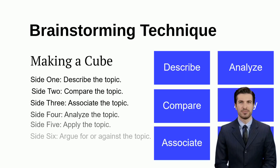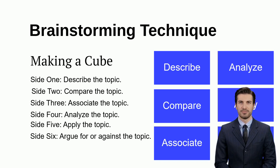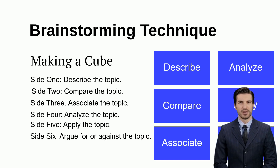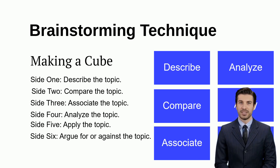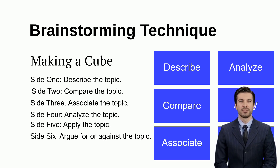Describe the topic: write a brief but clear definition of the topic you're brainstorming. Compare the topic. List key questions: identify key questions or aspects related to the topic. Associate the topic: write down any personal experiences, anecdotes, or stories that relate to the topic. Analyze the topic: consider the advantages and disadvantages, strengths, and weaknesses of the topic.